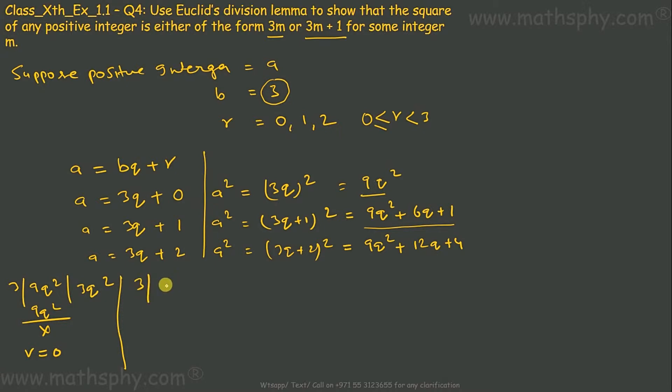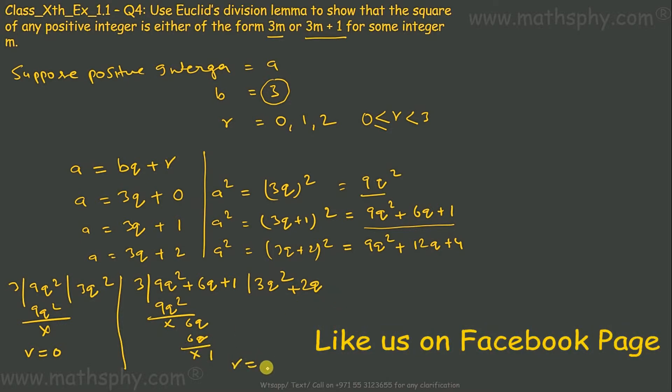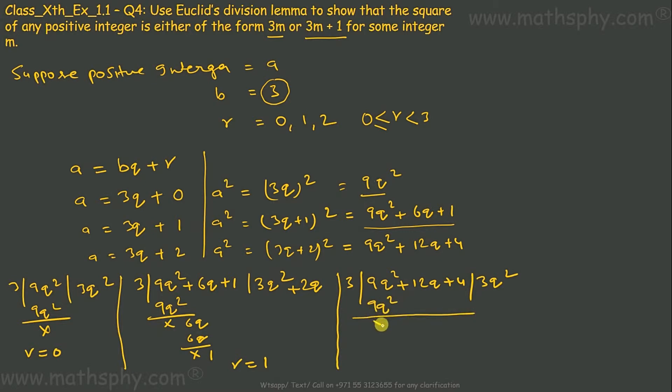When 3 divides 9Q² + 6Q + 1, it gives me remainder as 1. So when I divide this one, it gives me remainder again 1.